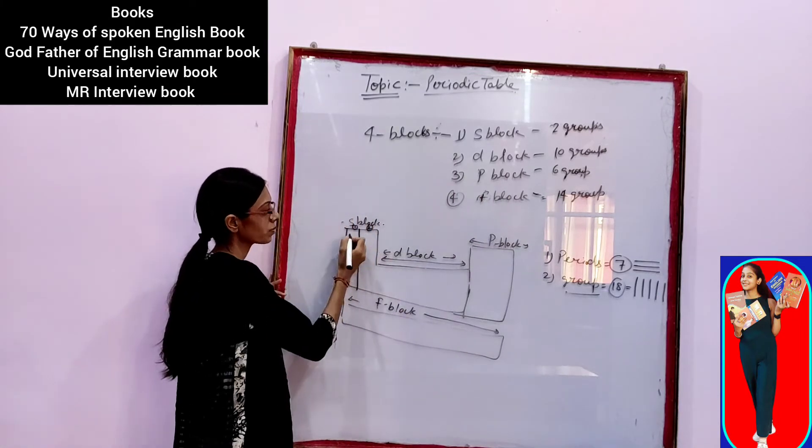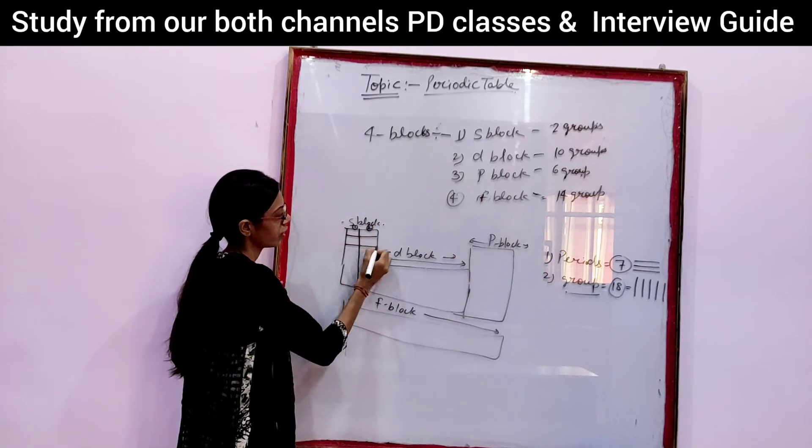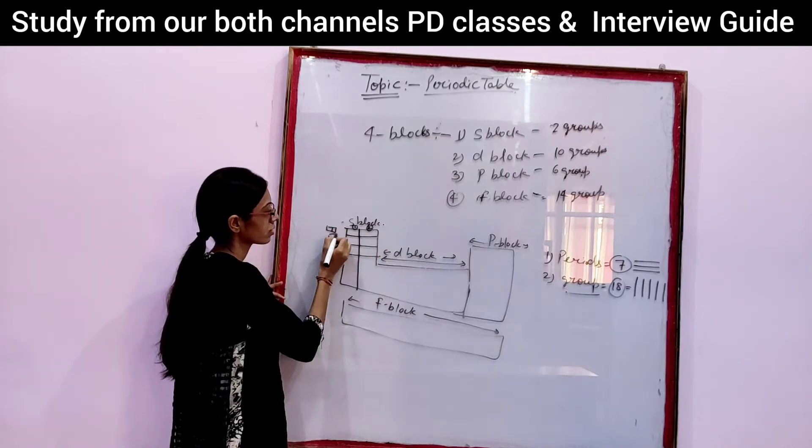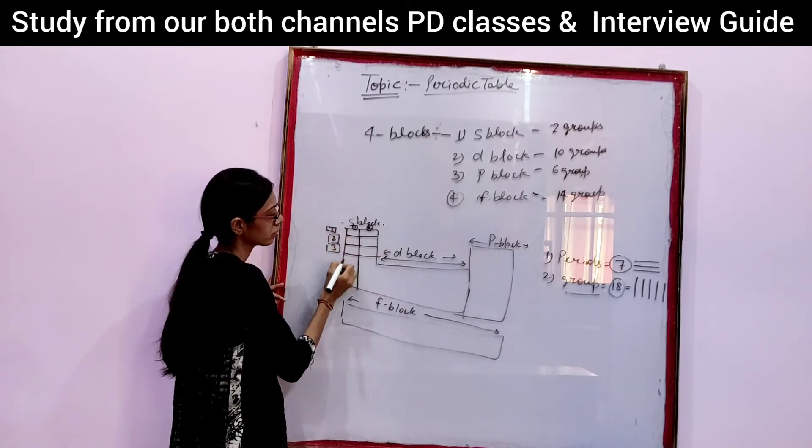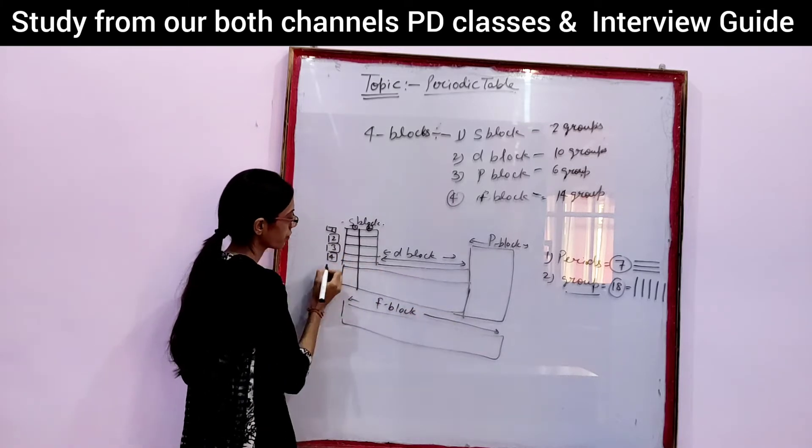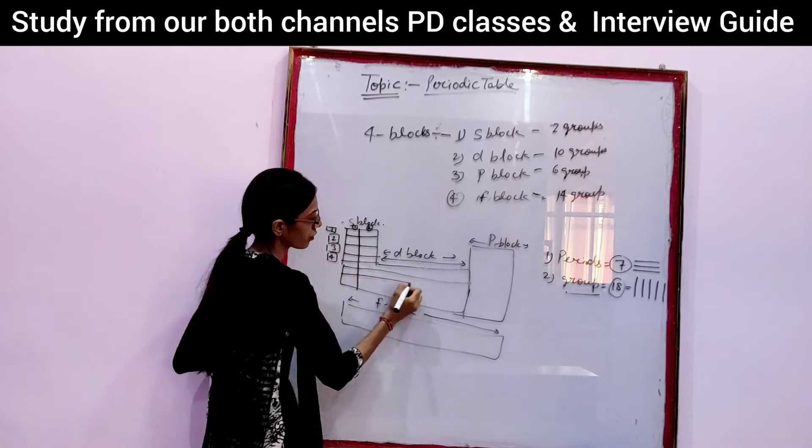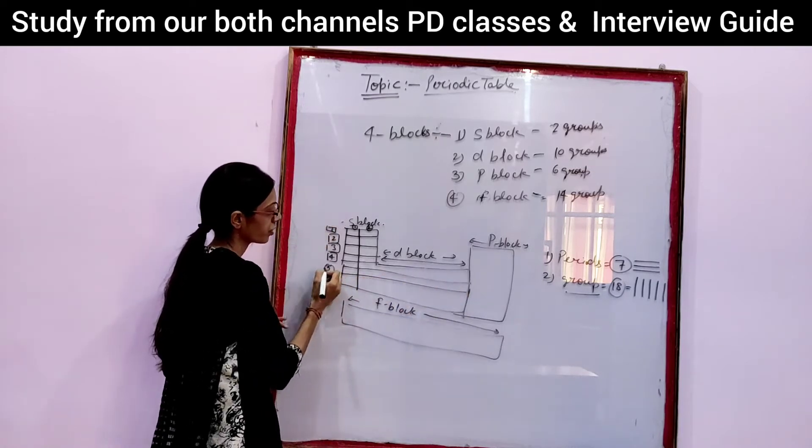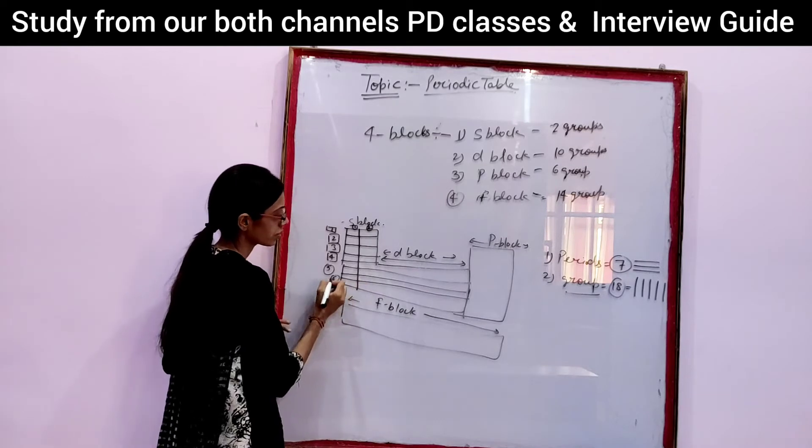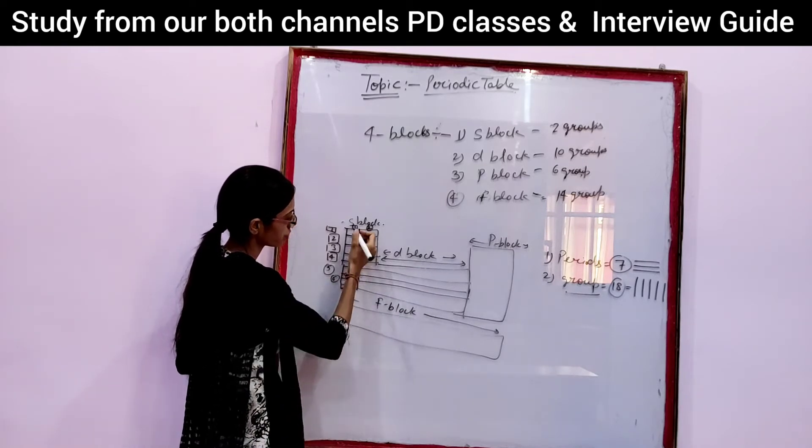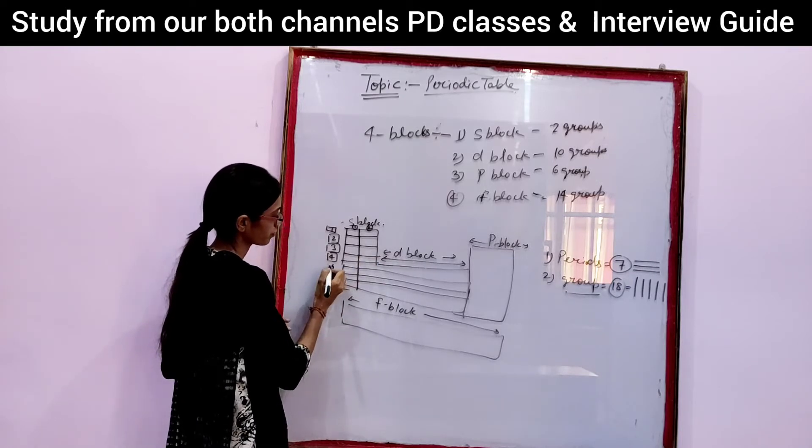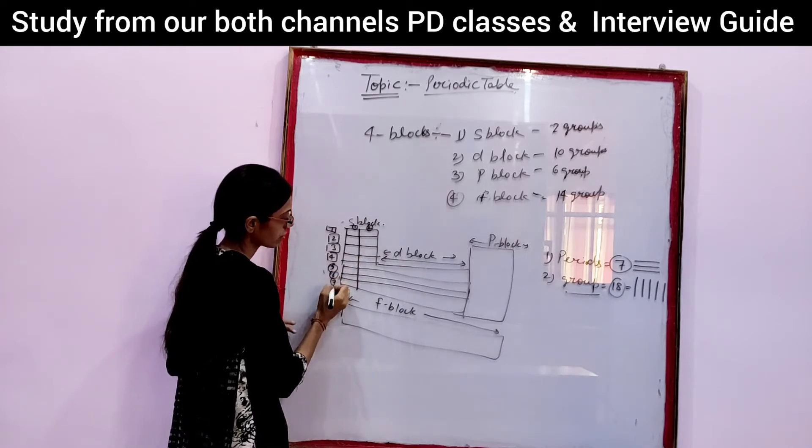Groups are always in vertical lines. You will partition like this and periods are always horizontal like this. Now students, I am partitioning horizontally: 1st, 2nd, 3rd, 4th, 5th, 6th, and 7th, right?